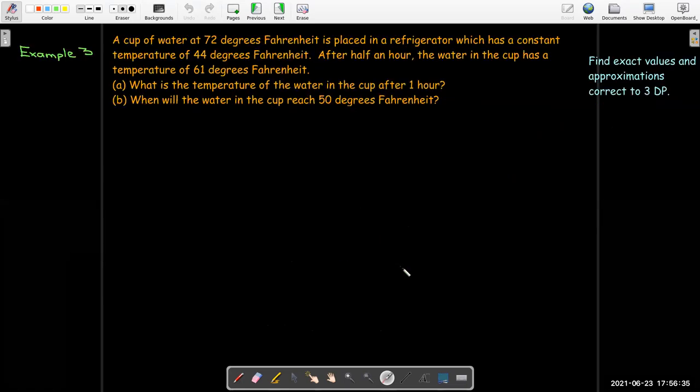So let's look at an example. We have a cup of water at 72 degrees Fahrenheit, so it's about room temperature. It's placed in a refrigerator that has a constant temperature of 44 degrees Fahrenheit. After half an hour, we see that the water in the cup has cooled down to 61 degrees. We'd like to know what the temperature of the water is after one hour, and then we'd like to know when will it get down to 50 degrees Fahrenheit.